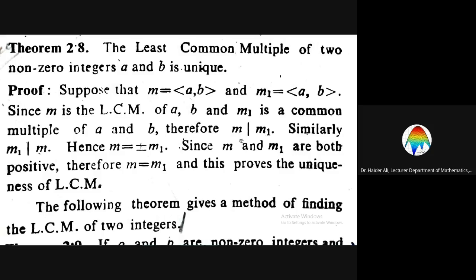Similarly, m1 divides m, because m1 is a least common multiple and m is a common multiple. So the least common multiple divides the common multiple, giving us that m1 also divides m.